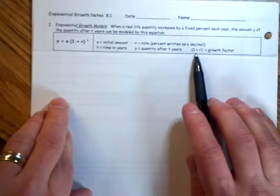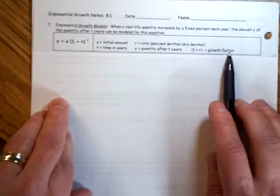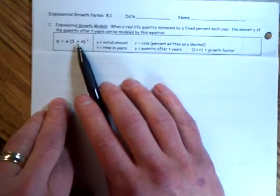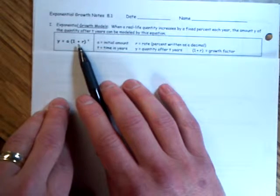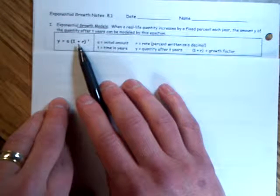All the variables are listed for you right here. If you recall, 1 plus r is your growth factor. So when you're given the formula and asked to find your annual interest rate, you look at the growth factor and subtract 1 from it. That will tell you your annual interest rate.